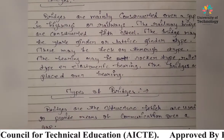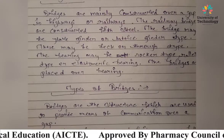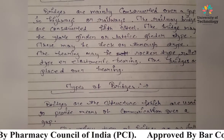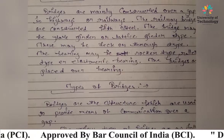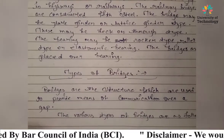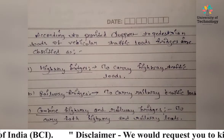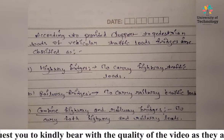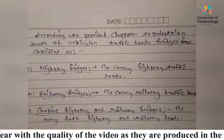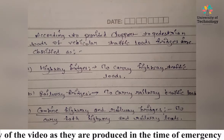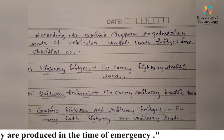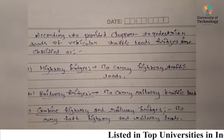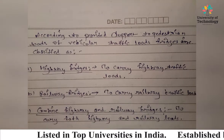Now let us look at types of bridges. Bridges are basically used to provide means of communication over a gap. According to the support provided to pedestrian loads or vehicular traffic loads, bridges are classified based on the types of vehicles — trains, cars, buses, etc.